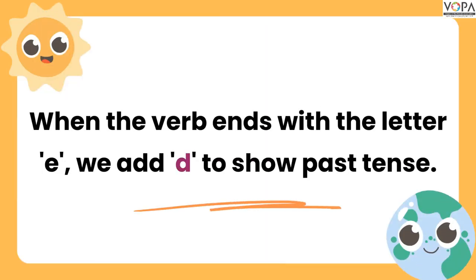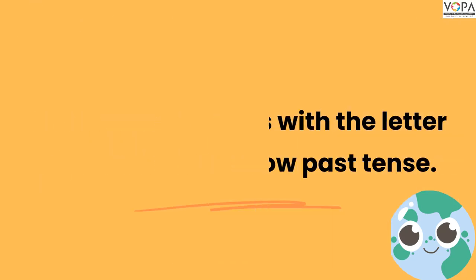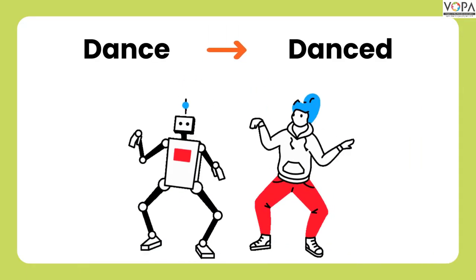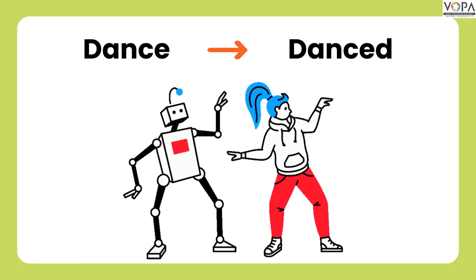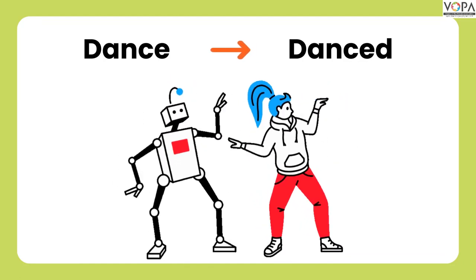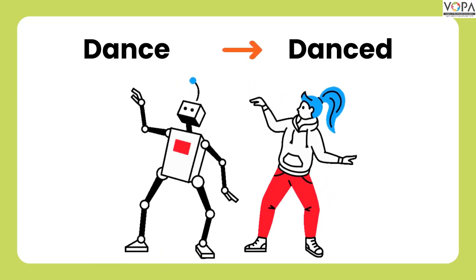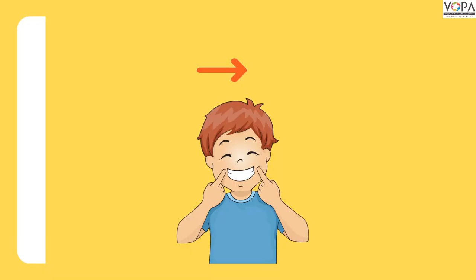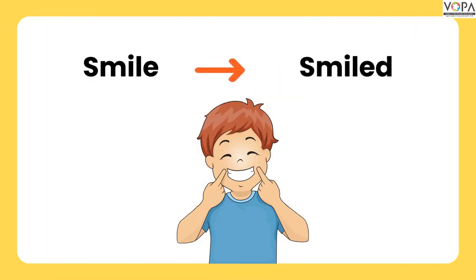When the verb ends with the letter 'e', we add 'd' to show past tense. Jeevhaa ekhaadah shabd 'e' ya letter nye samtot, teevhaa, kya shabdhachah bhutkakal karanayasathi, aapen 'd' haa shabdh lao to. For example: dance — danced. E nye dance yaya shabdhachah shewat zhalilala ahe, ane zhar aapleala bhutkali rup dance se baghaaj jayashe, ta aapan 'e' chapurhe 'd' lao lela ahe. Smile — smiled.